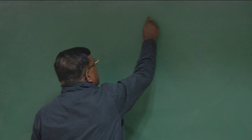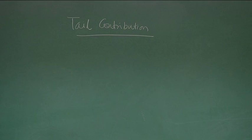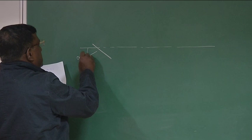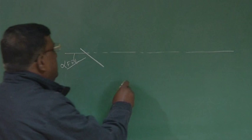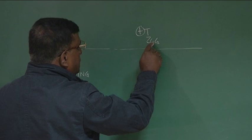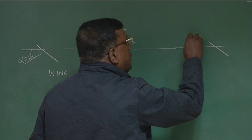Now, we will be talking about tail contributions. If I draw this diagram, the wing was here and this is alpha FRL. We are talking about tail contribution. Let me draw the diagram — this is the wing part, we have already done. CG is somewhere here, this is Z_CG, and this tail is somewhere here. The tail also has some setting angle, i_T.